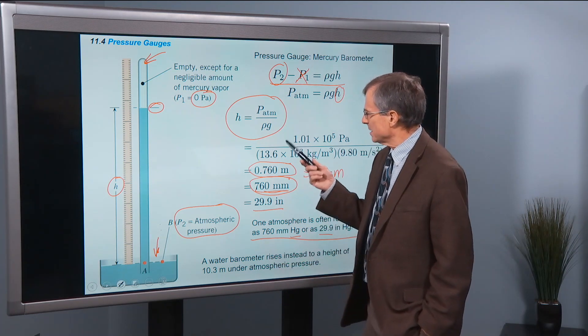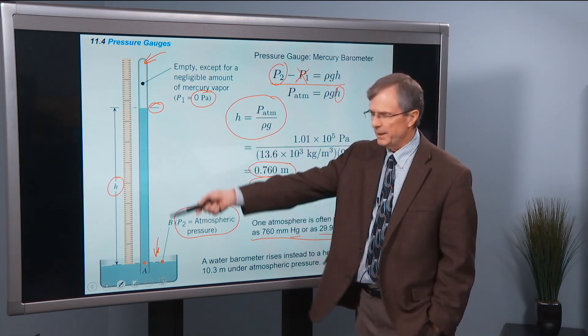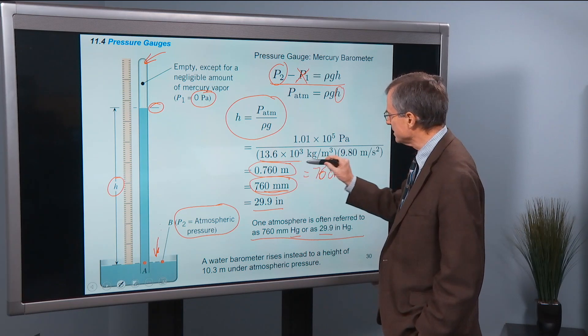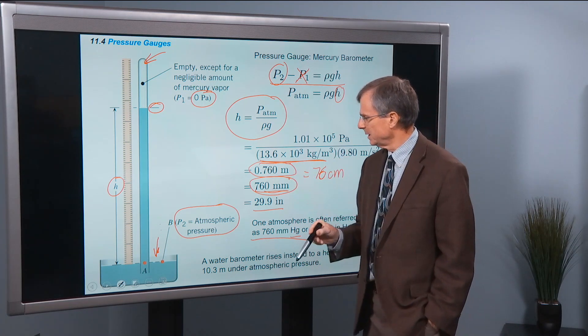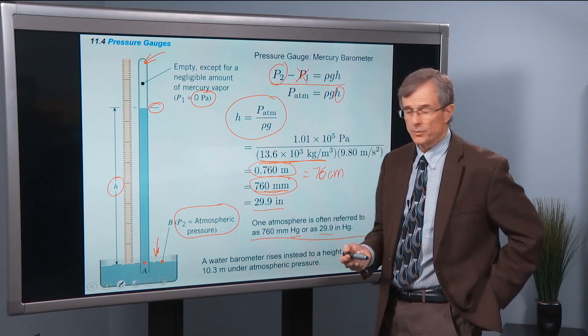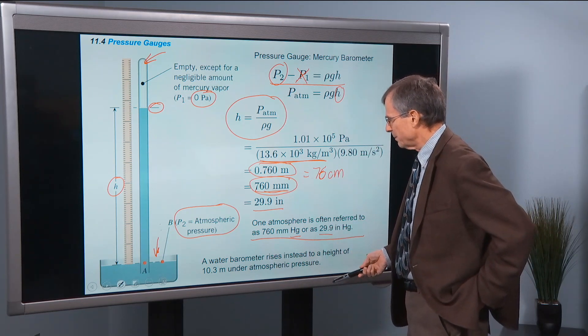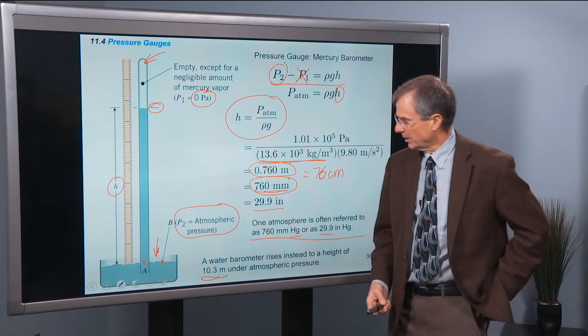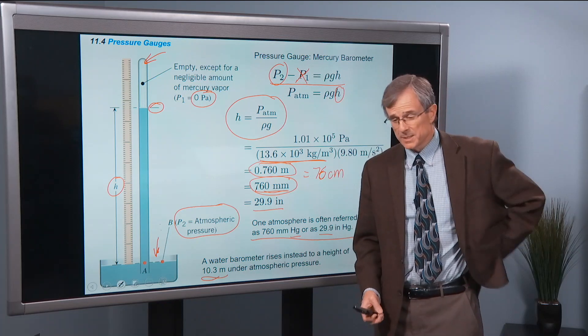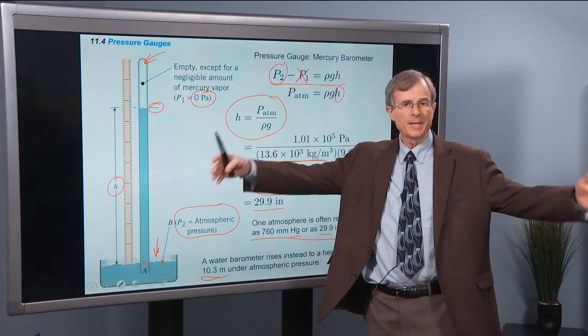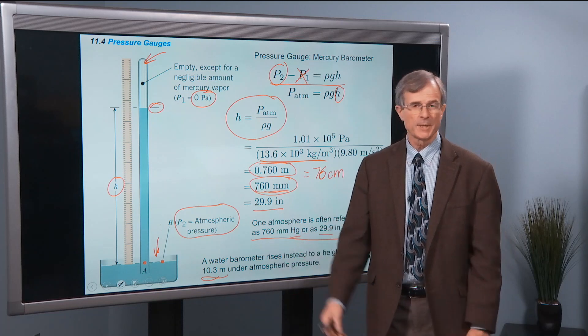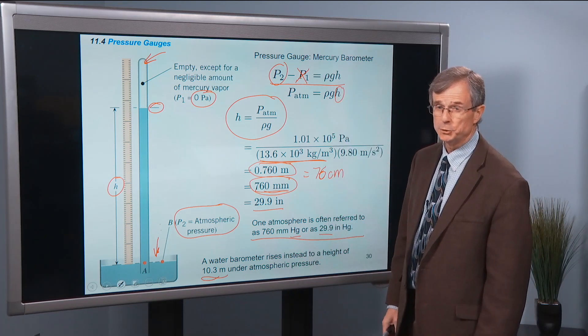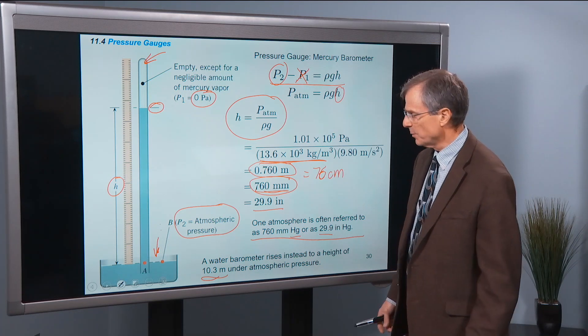So if we were to replace this mercury barometer with a water barometer, we'd have to replace the density of the fluid with the density of water, which is 1 times 10 of the 3. And if you work the numbers out, you end up with needing a column of water that's 10.3 meters. That's the distance between, that's basically 10 yards between the two, 10-yard and the 20-yard line in the football field. That's a pretty good sized column of water. That's a long tube. So it's much more convenient to use mercury.